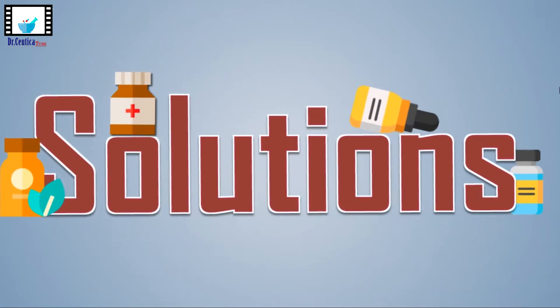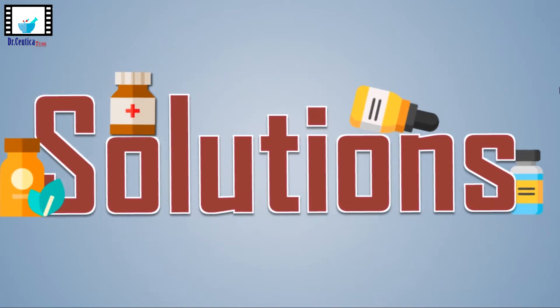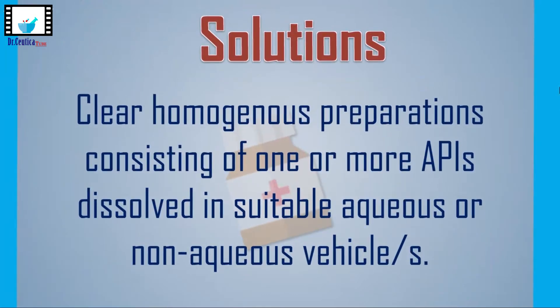Today we will start with one of the quite common groups of liquid dosage forms, that is solutions. We came across solutions and knew how they are basically formed and what happens at the molecular level, taking one case scenario in the dissolution video. I will put the link to that video in the description box for you. So, if we wanted to define solutions as dosage forms, we would say they are clear, homogenous dosage forms composed of one or more active pharmaceutical ingredients dissolved in a suitable solvent or solvents. We refer to the solvent system as the vehicle here.